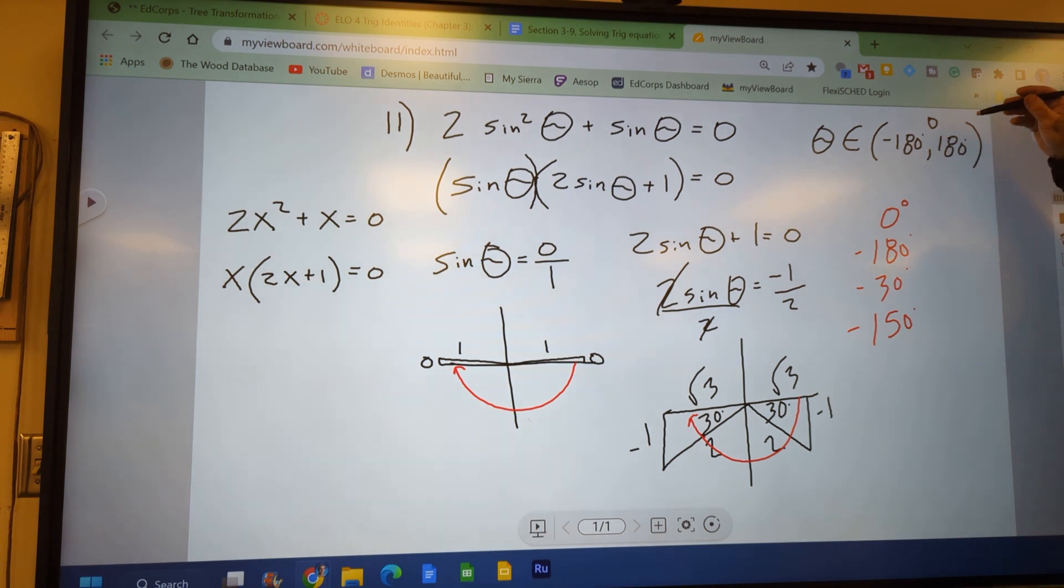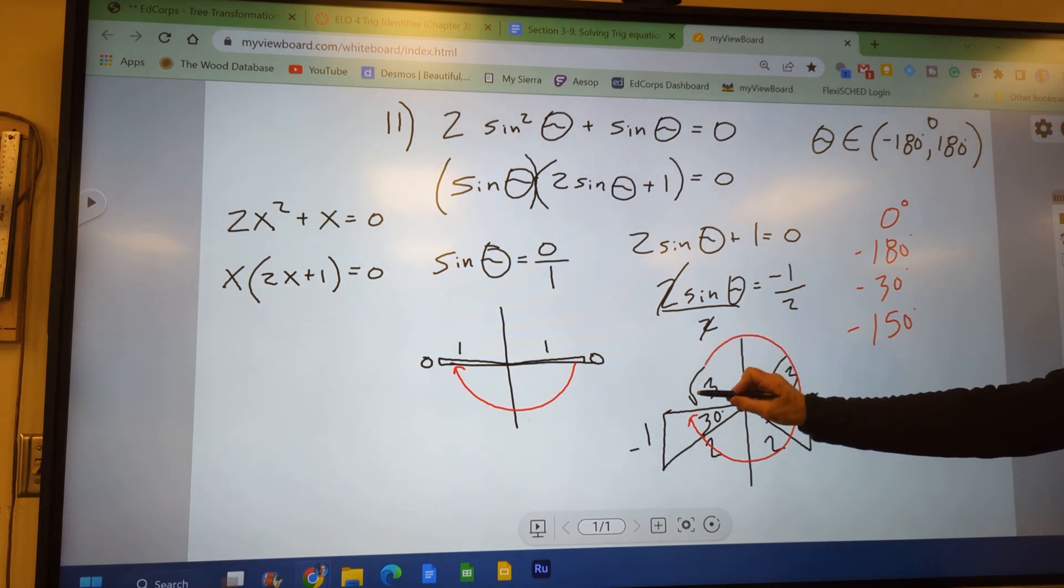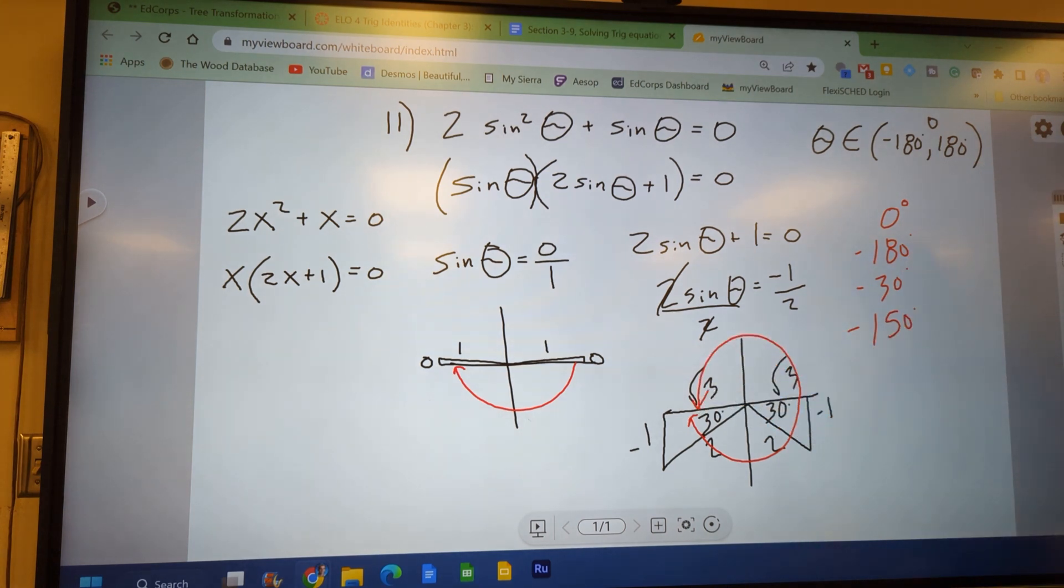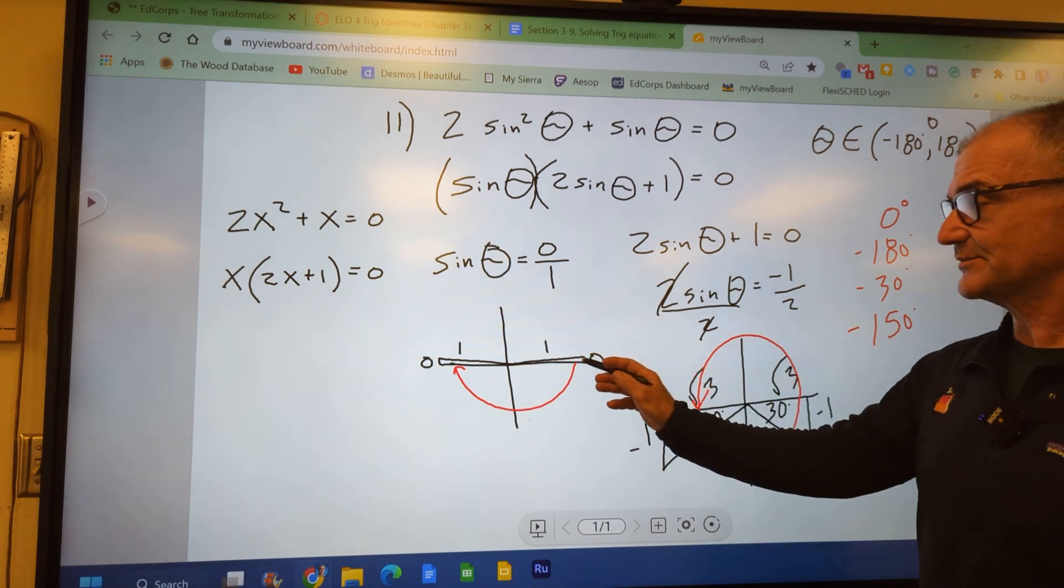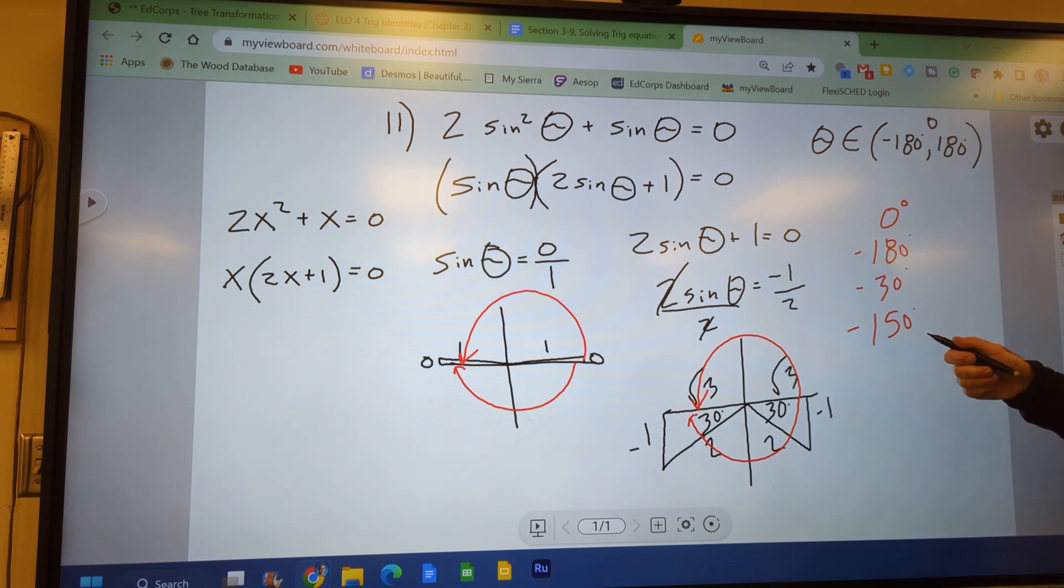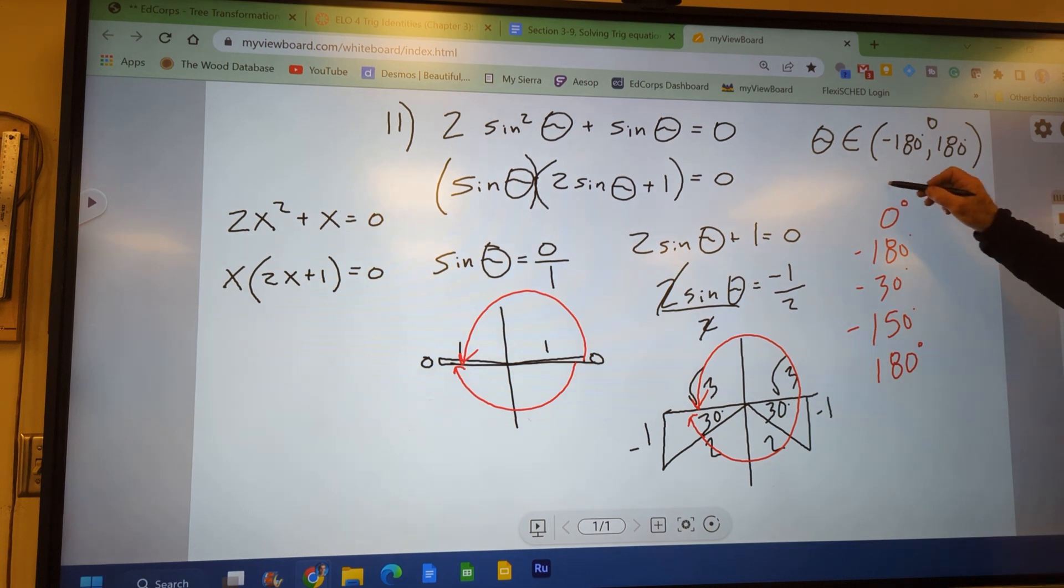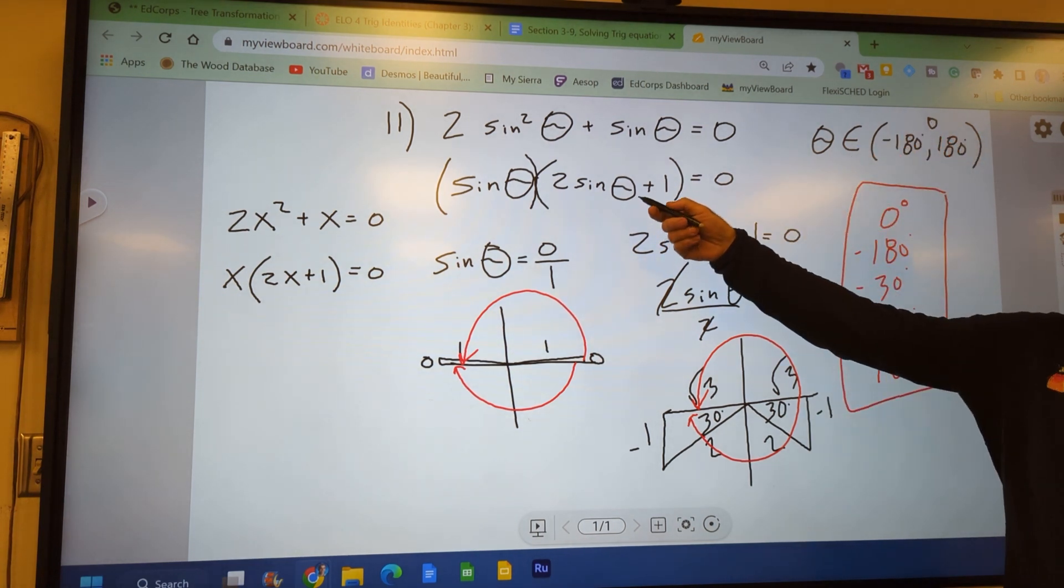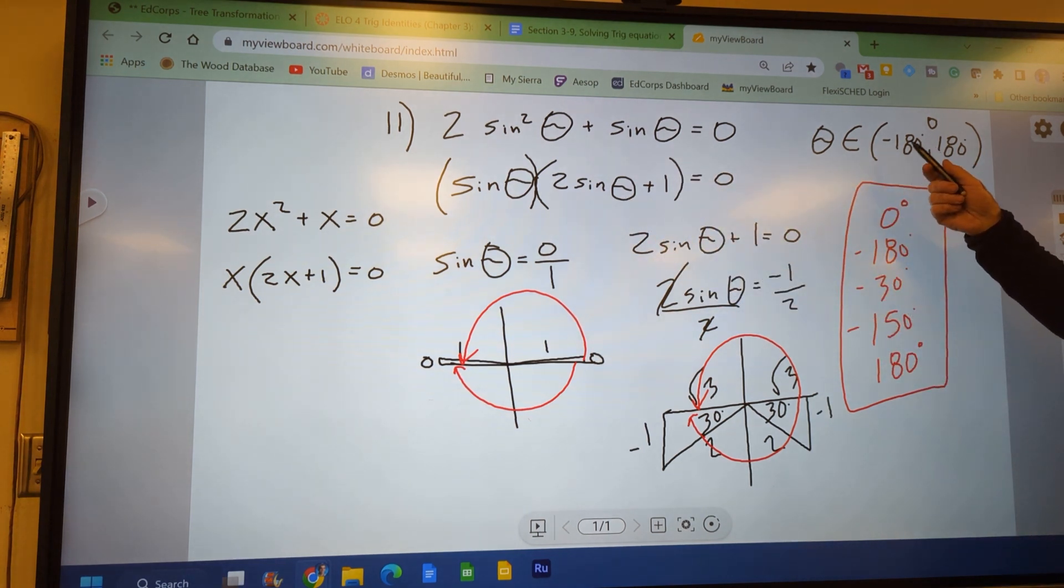And then I'm going to look at all my solutions between 0 and positive 180. So all these up here, well there aren't any. And then all these up here, which will be 0 and 180. So I already have the 0 there, so I'm going to add the positive 180. So this is a series of all possible answers that will answer or solve this equation given this domain right here.